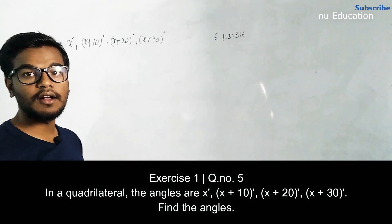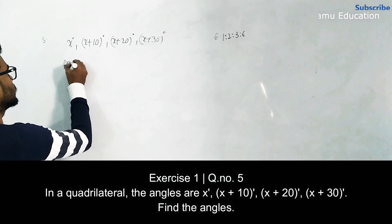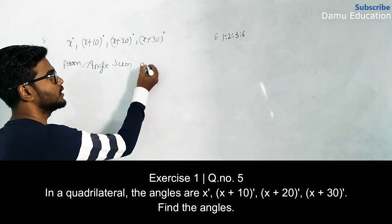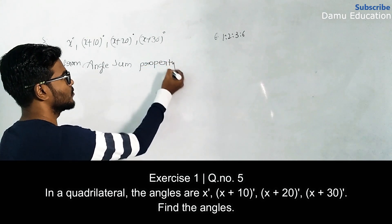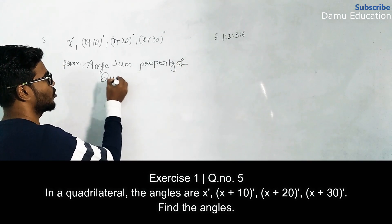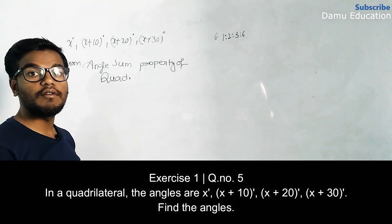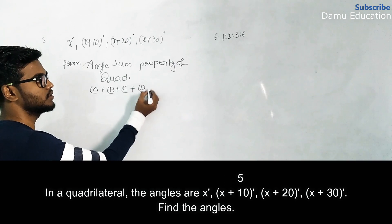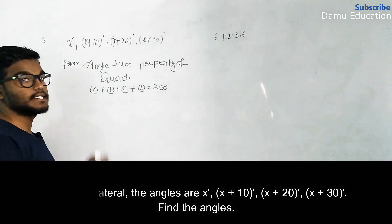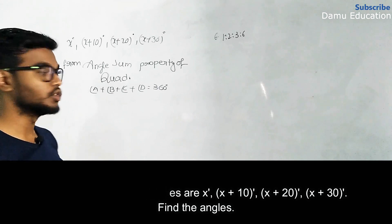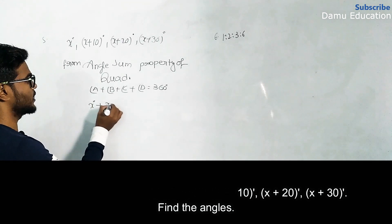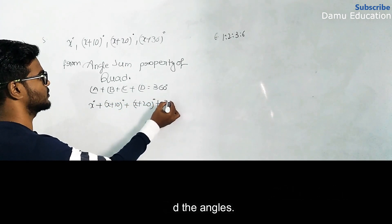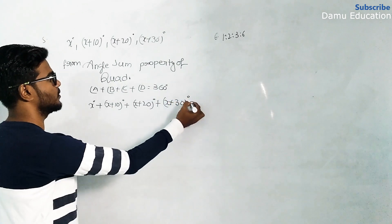We are going to use the angle sum property of a quadrilateral: angle A plus angle B plus angle C plus angle D equals 360 degrees. So here, the angles are x degrees, plus x plus 10 degrees, plus x plus 20 degrees, plus x plus 30 degrees, all equal to 360 degrees.